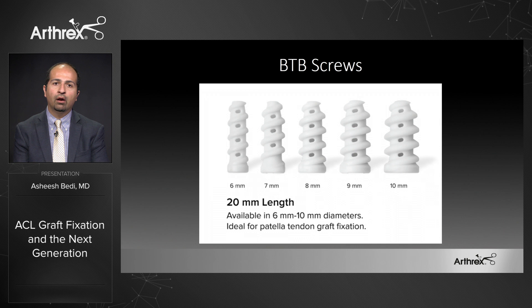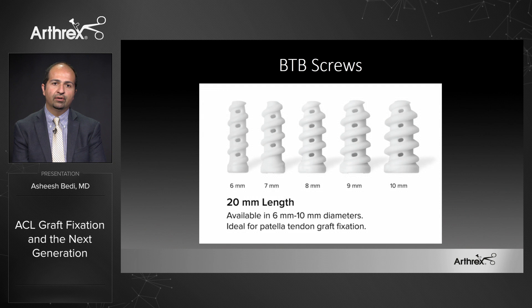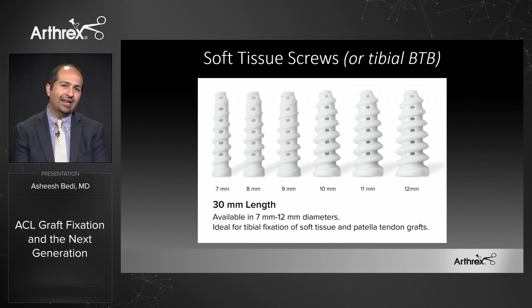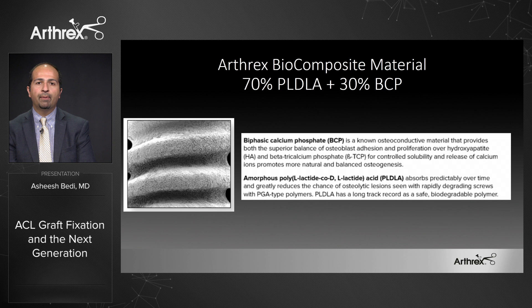In terms of available sizes, for bone-tendon-bone situations we typically have sockets as small as 6, 7, or 8 millimeters up to 10 and 11 millimeters, with 20 millimeter screw lengths available — a good match for a typical bone plug and ideal for BTB fixation. On the soft tissue side or tibial side of a BTB graft, we have 7 to 12 millimeter sizes in 23 and 30 millimeter lengths, ideal for soft tissue and patellar tendon graft fixation, and also useful for MPFL reconstruction.